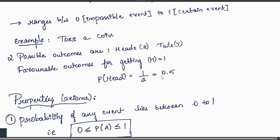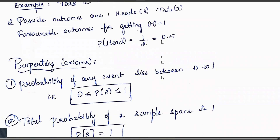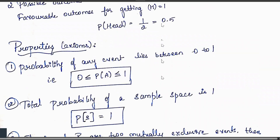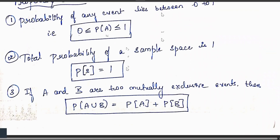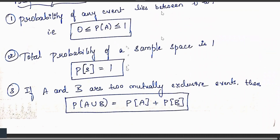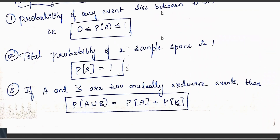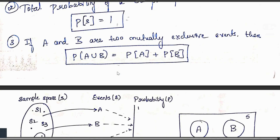The properties or axioms of probability are: first, the probability of an event lies between 0 and 1, i.e., 0 ≤ P(A) ≤ 1. Second, the total probability of a sample space is 1, i.e., P(S) = 1. Third, if A and B are two mutually exclusive events, then P(A ∪ B) = P(A) + P(B).